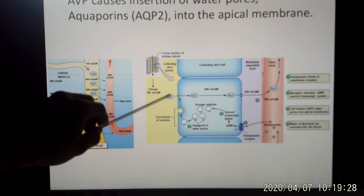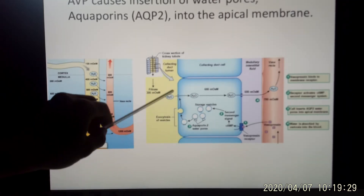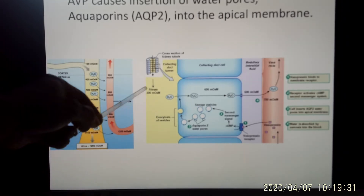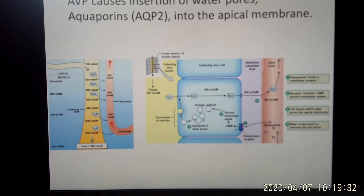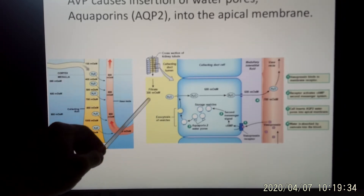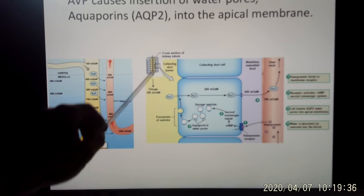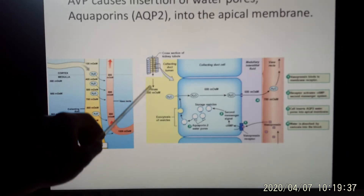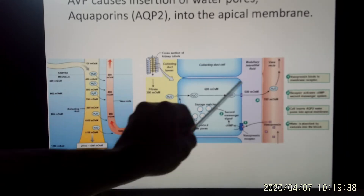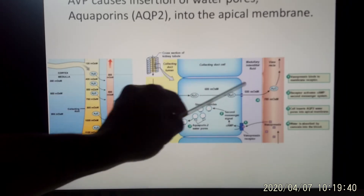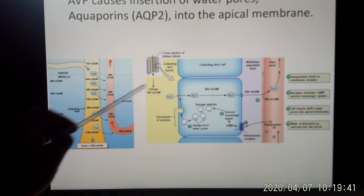More aquaporin-2 is placed on the apical side of the cell membrane, making it permeable to water. Water then moves from the lumen back into the ECF, because water always moves to dilute the solute.